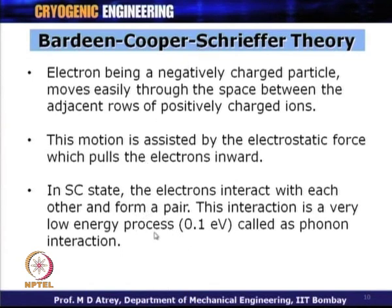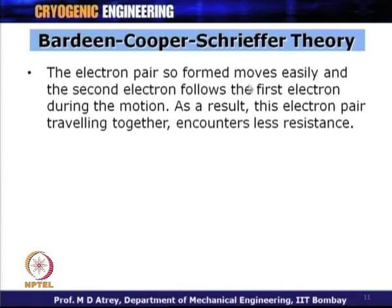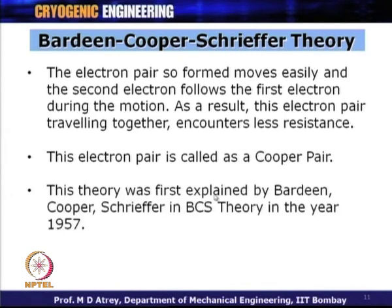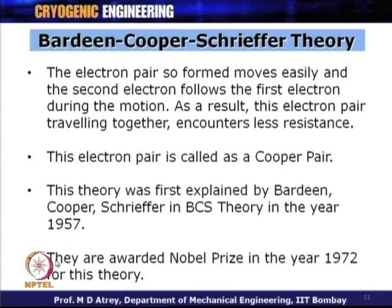The electron pair travels together and encounters less resistance, resulting in increased electron motion and more current in the superconducting state. This pairing is the highlight of the BCS theory and is what makes the material superconducting. This theory was first explained by Bardeen, Cooper, and Schrieffer — BCS — in 1957, and they were awarded the Nobel Prize in 1972 for this theory. This concludes the basics of superconductivity and BCS theory.